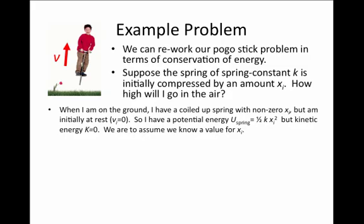When we're on the ground we have the spring coiled up with a value of xi that's not zero but we are initially at rest, so we have an initial potential energy from the spring, one-half k xi squared, but our kinetic energy is zero. We'll assume that we know what xi is, how much the spring compressed.